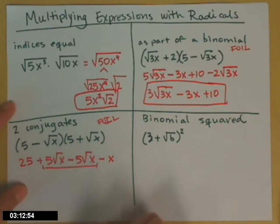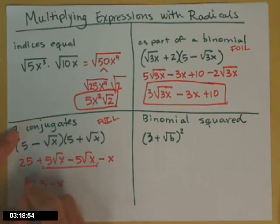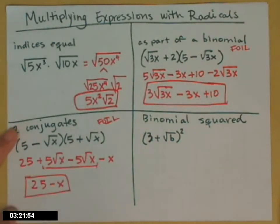So look at those two terms in the middle. One's positive, one's negative. Those guys add away. And that whole thing simplifies to 25 minus x.